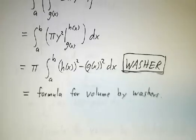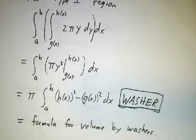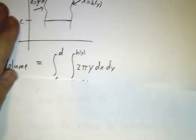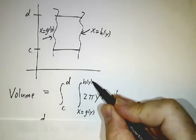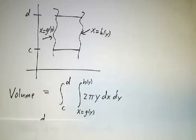Well, what if you got a Type 2 region? You got a Type 2 region, you're gonna integrate as x goes from g(y) to h(y), and then as y goes from c to d.